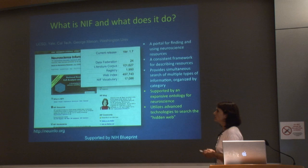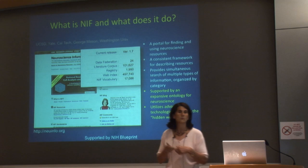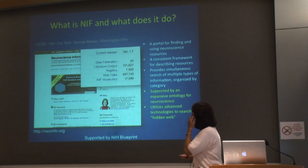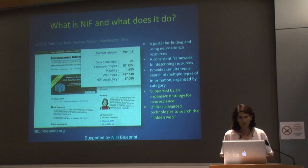NIF provides simultaneous search over multiple types of information organized by various categories. We've spent a lot of time developing ontologies and knowledge models that allow us to actually find the information we need. We utilize existing tools, but also try to use advanced technologies. We know that Google searches the world, Bing searches the world. What we need to do is enhance this for neuroscience, because a lot of what we need isn't accessed well by search engines—the so-called hidden web problem, usually things inside dynamic resources.